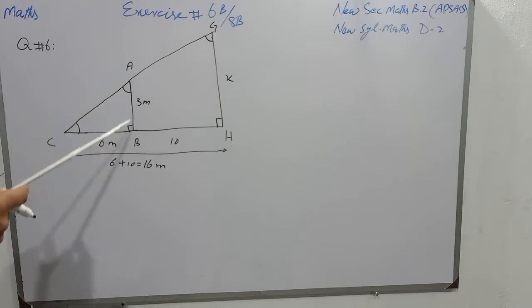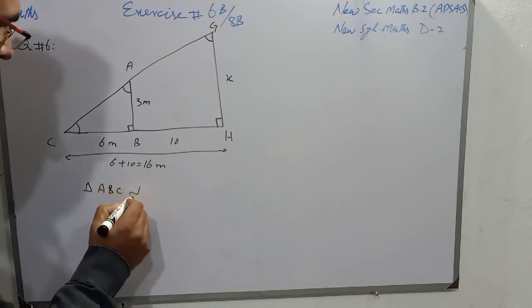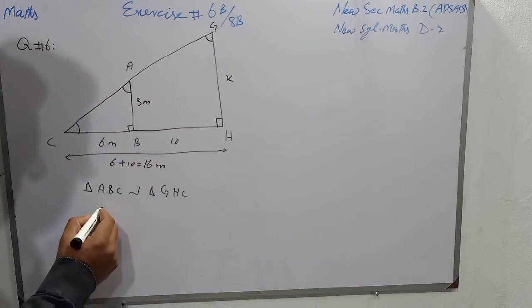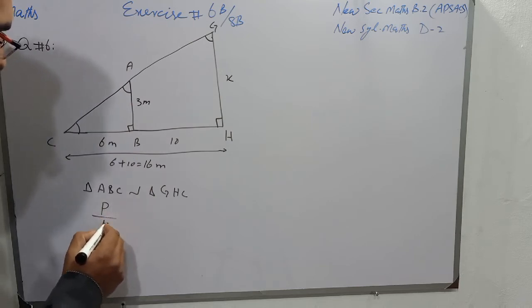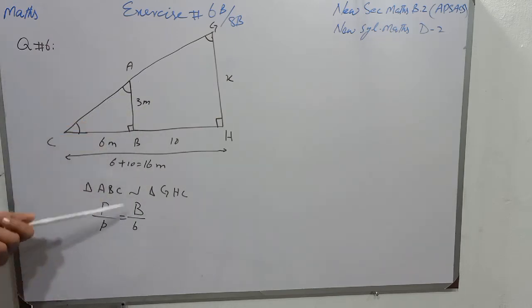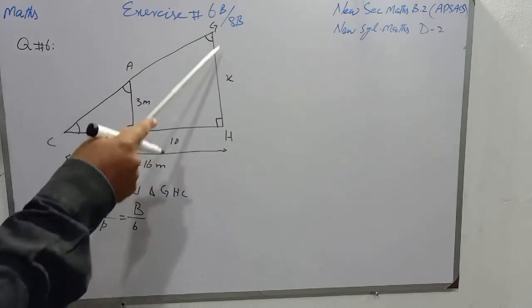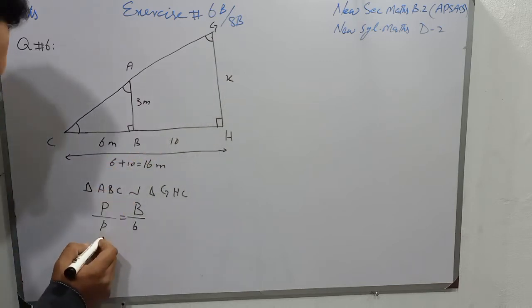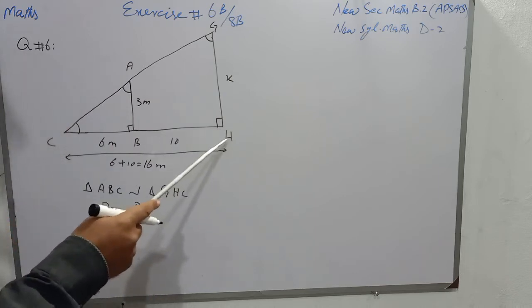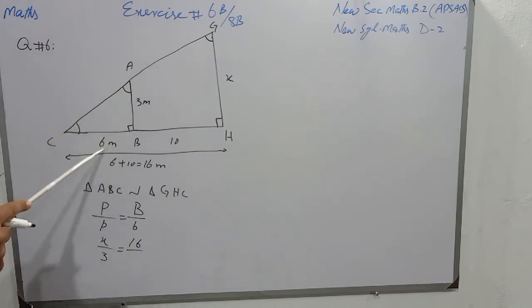You know very well, if triangle ABC and GHC are similar — triangle ABC is similar to triangle GHC — then perpendicular over perpendicular is equal to base over base. The perpendicular of the larger triangle is X, whereas the perpendicular of the smaller triangle is 3. It is not 6, it is B — the base of the small triangle is 6.